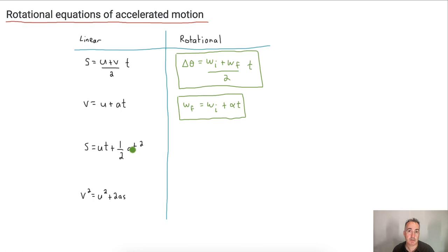Now this one here, s equals ut plus half a t squared. Let's think. Now s again, remember, is delta theta, and so we have ut - well, u isn't u anymore, remember it's omega i, times t, plus one half, and instead of a, remember it's alpha, so it's alpha t squared. So do you see this isn't so bad at all. This is just a matter of making that substitution, that's it.